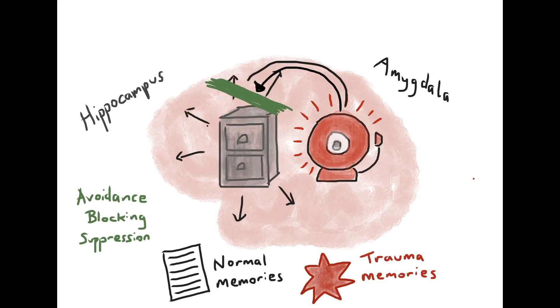However, what we know about blocking and suppression is that the more you try not to think about something, the more it tends to keep coming back. A stupid example is to try as hard as you can not to think about a pink elephant on a bicycle.